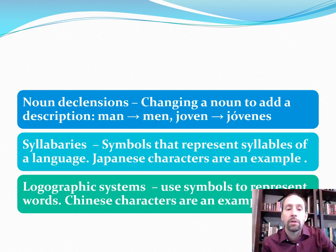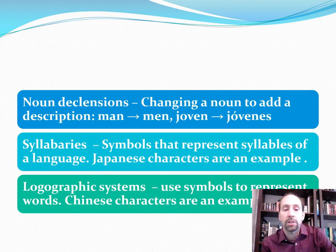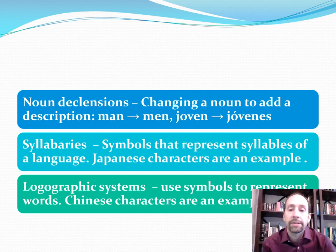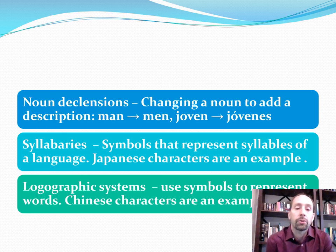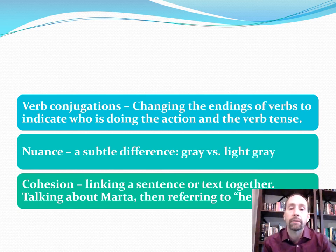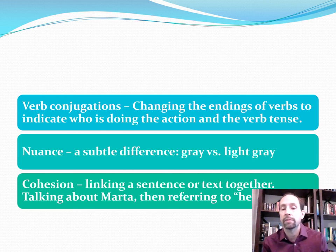Noun declensions involve changing a noun to add a description — for example, 'man' to 'men,' or in German 'Habe' to 'Habenes.' Syllabaries are morphological and logographic systems — more relevant for Japanese or Chinese teachers. Syllabaries use symbols that represent syllables of a language; Japanese characters are an example. Logographic systems use symbols to represent whole words; Chinese characters are an example. Verb conjugations involve changing the endings of a verb to indicate who is doing the action and the verb tense — not as prominent in English but very important in Spanish.